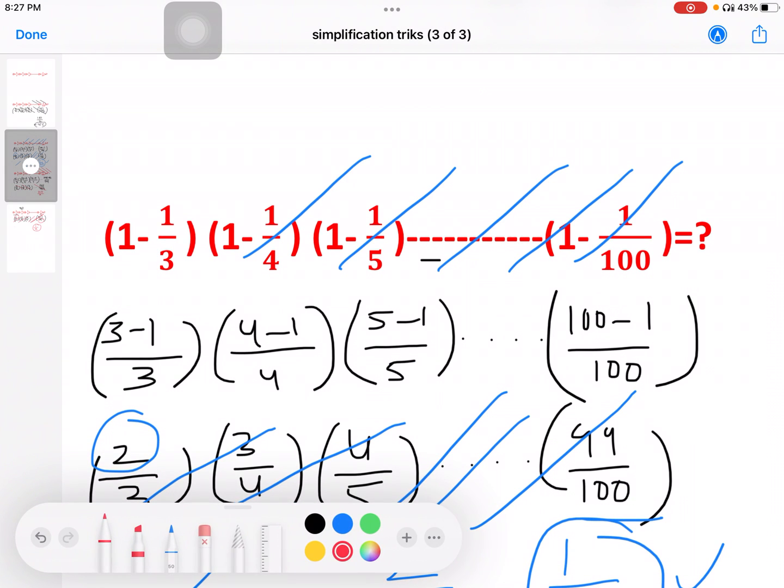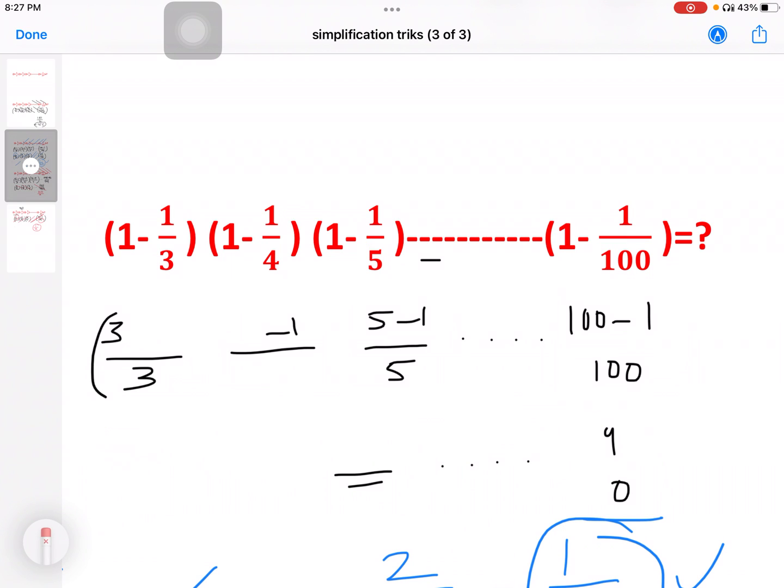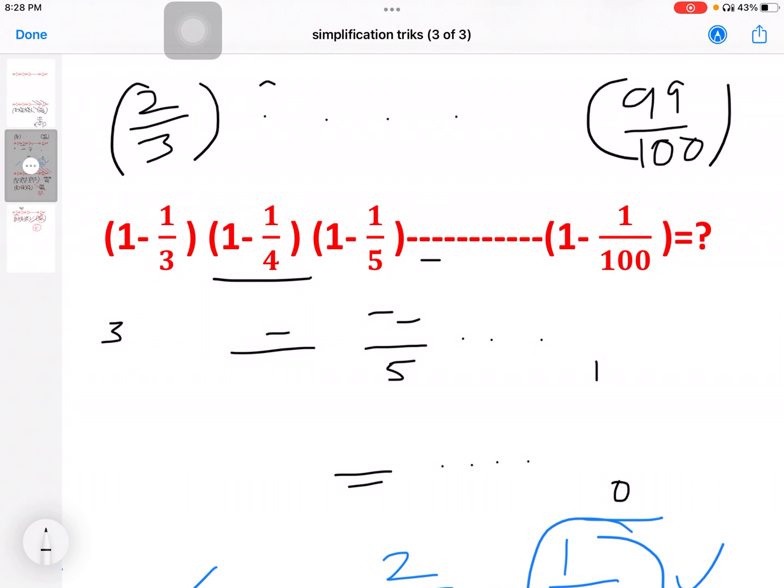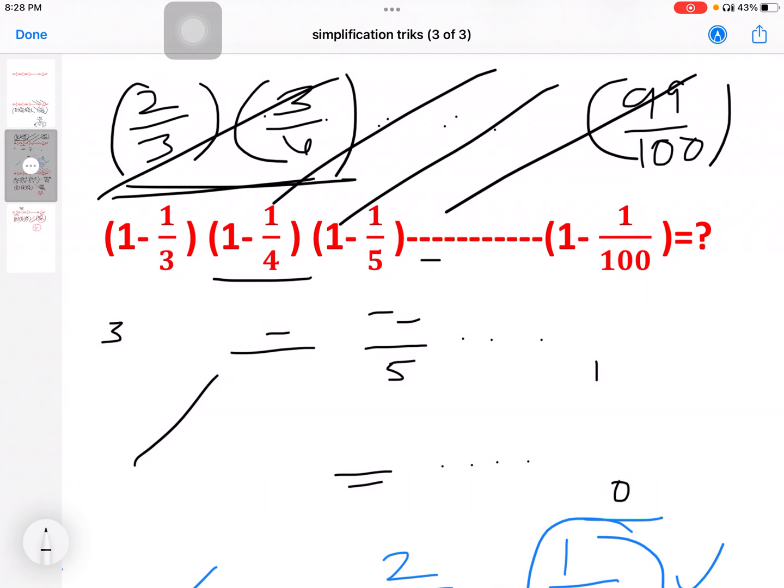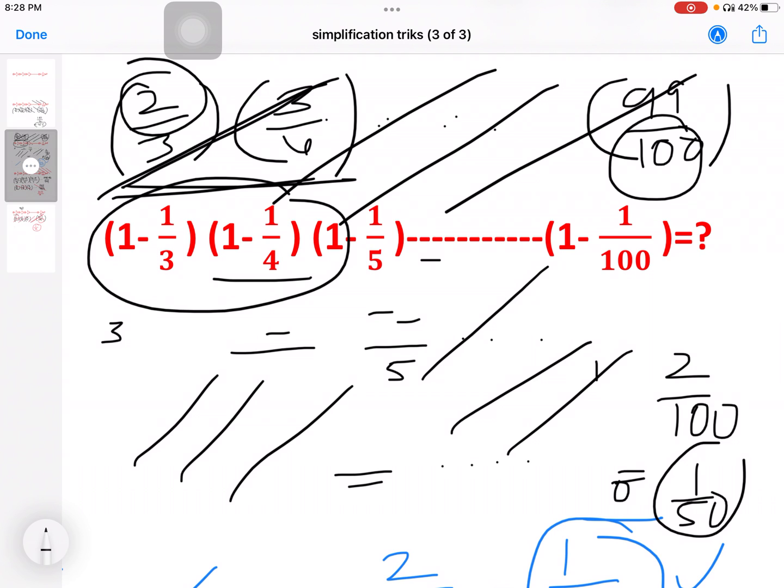So look here. We have 2 by 3, we have 3 minus 1 is 2 by 3, we have 100 minus 99 by 100, we have 4 minus 3 by 4. Just the same pattern. We have to use the same pattern. This is 2 by 100, that is equal to 1 by 50. Just the first two terms, the pattern is like this.